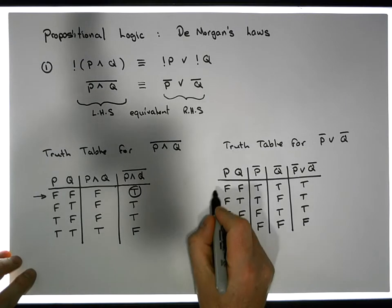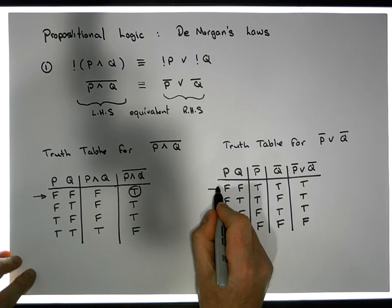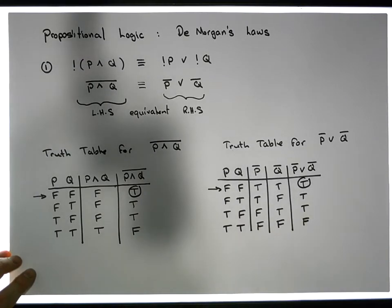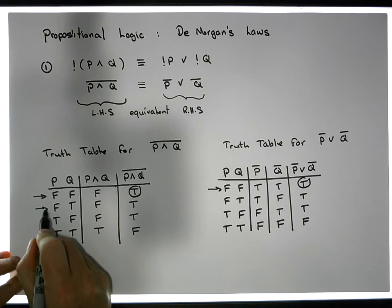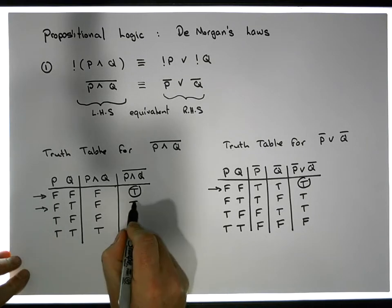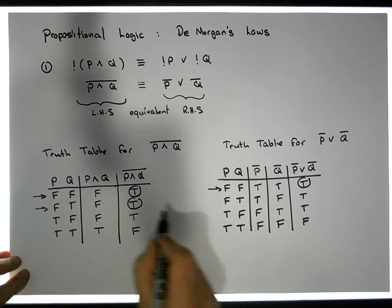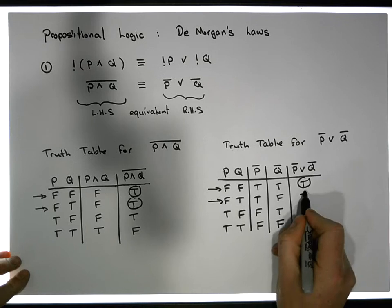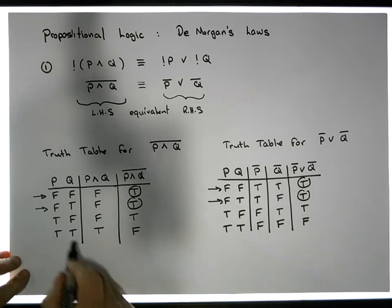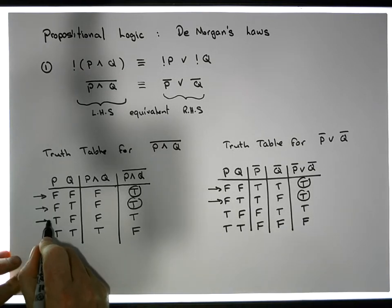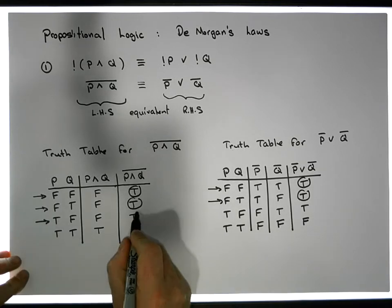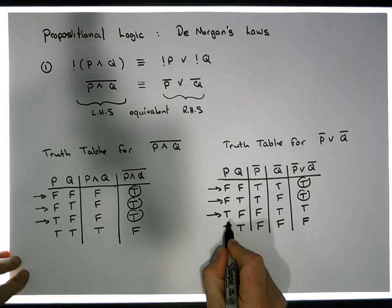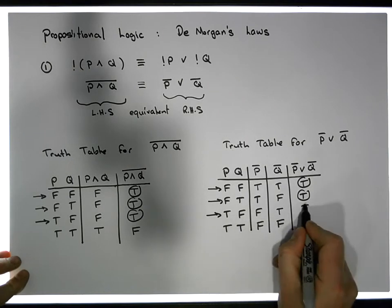When we look at the right-hand side and feed in false-false, we get back a true value. When we feed in false-true, we get a true value, and on the right-hand side when we feed in false-true we also get a true value. Similarly, when we feed in true-false we get a true value, and on the right-hand side when we feed in true-false we also get a true value.